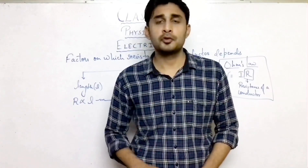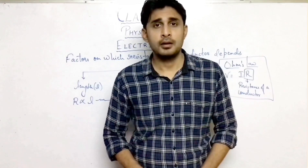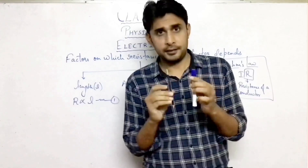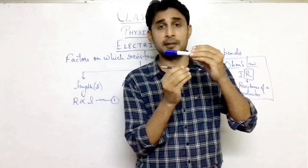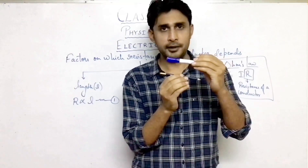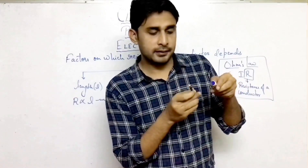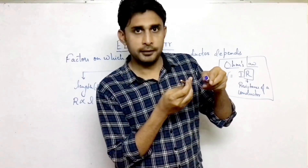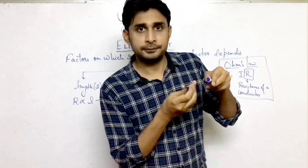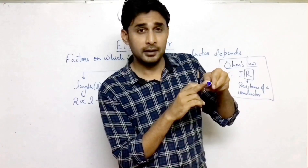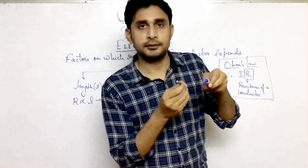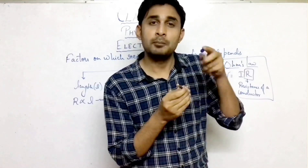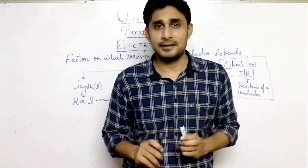For area of cross section, we will consider two wires of the same length and same material. As you can see, one is a thicker wire and the other wire is thin, because the area of cross section of this wire is more compared to the other. Now, the resistance of the thick wire is less compared to the resistance of the thin wire. Which means if area of cross section is more, resistance will be less, and if area of cross section is less, resistance will be more. So a thicker wire has less resistance than a thin wire.